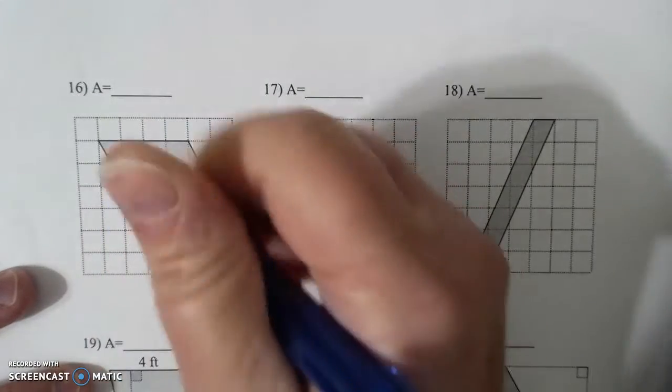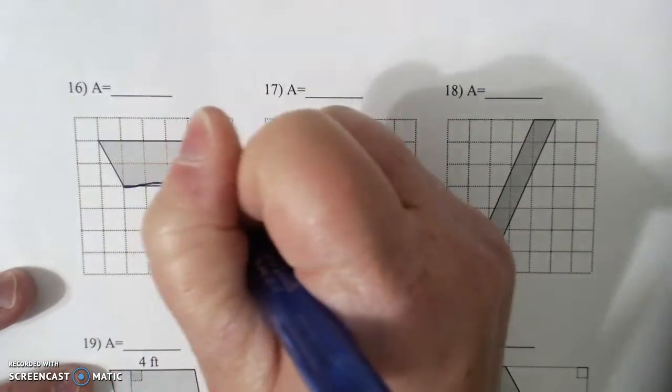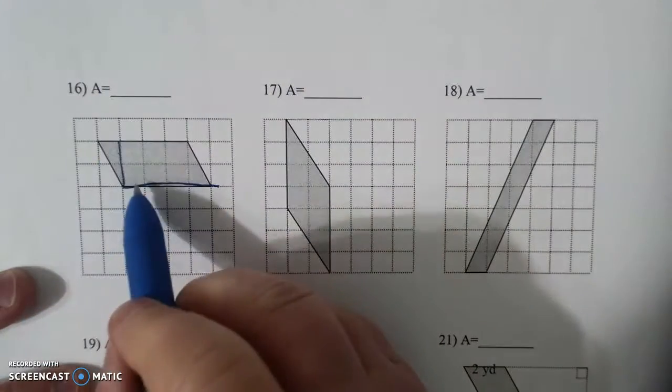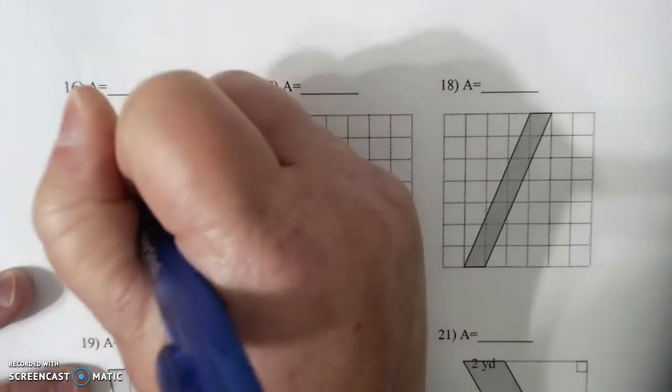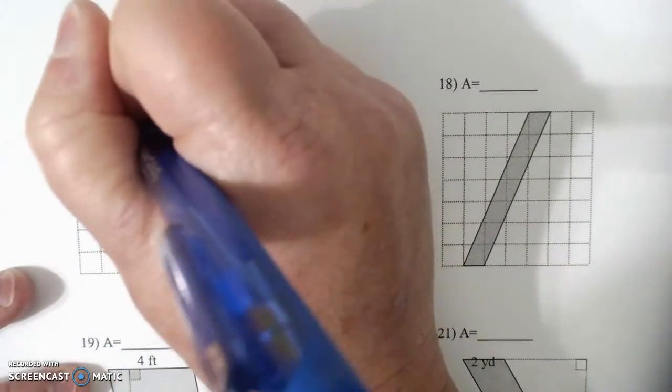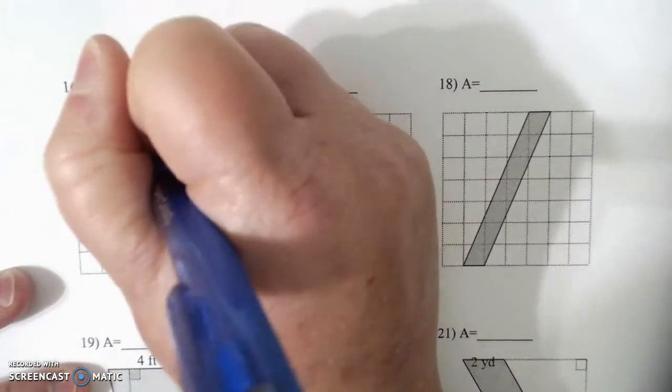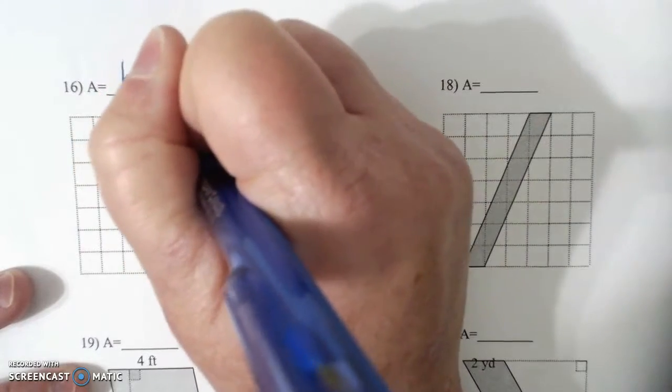Cut that off. Swing it over here. This is your base. This is your height. 1, 2, 3, 4. 2, base times height, 4 times 2, 8 units squared.